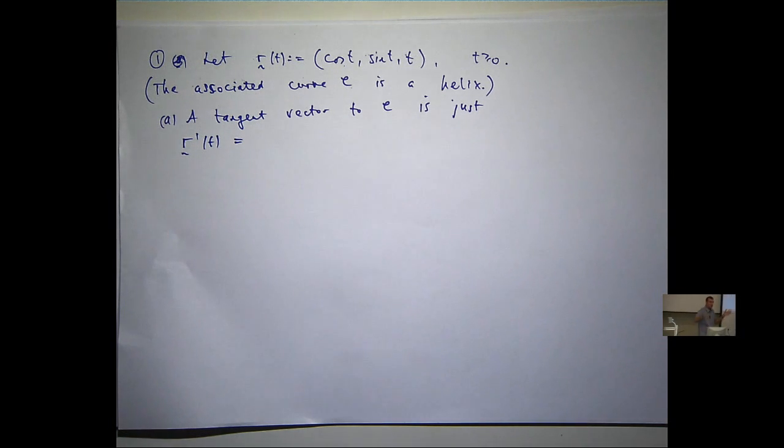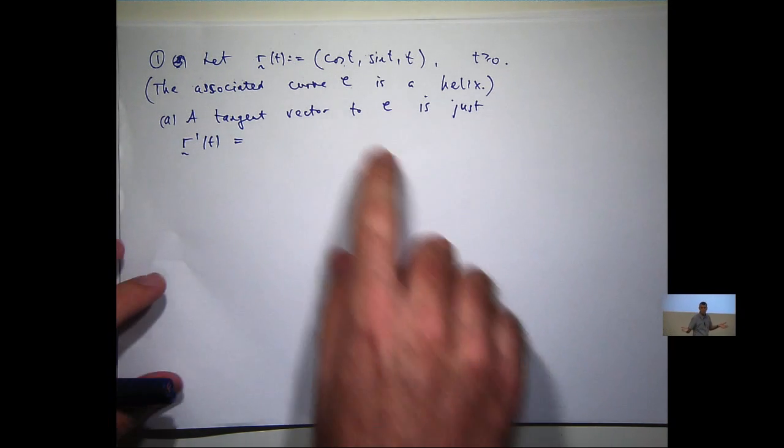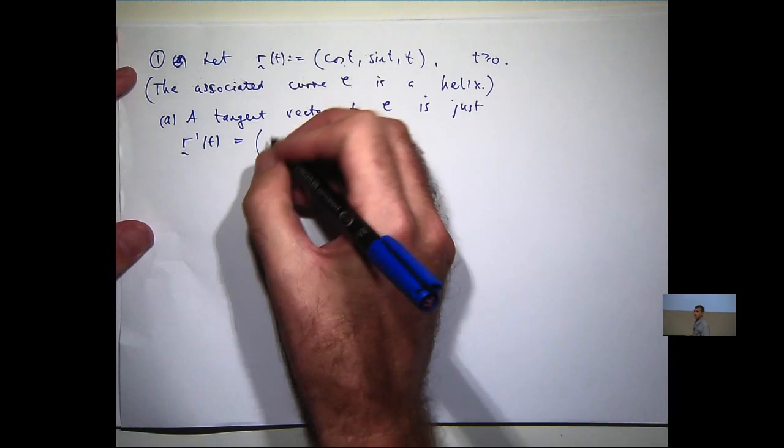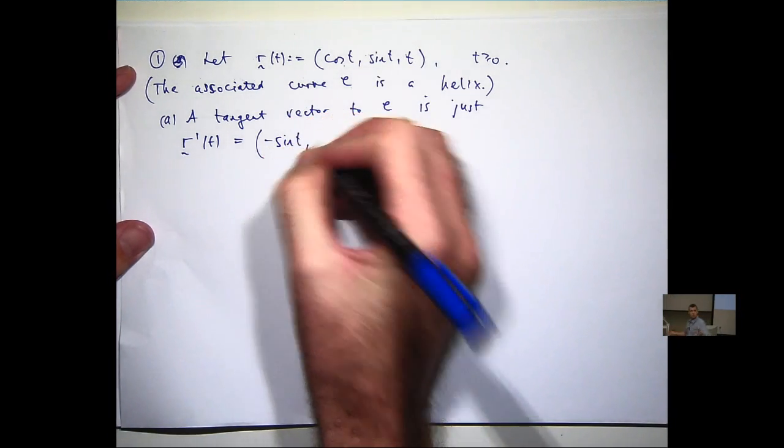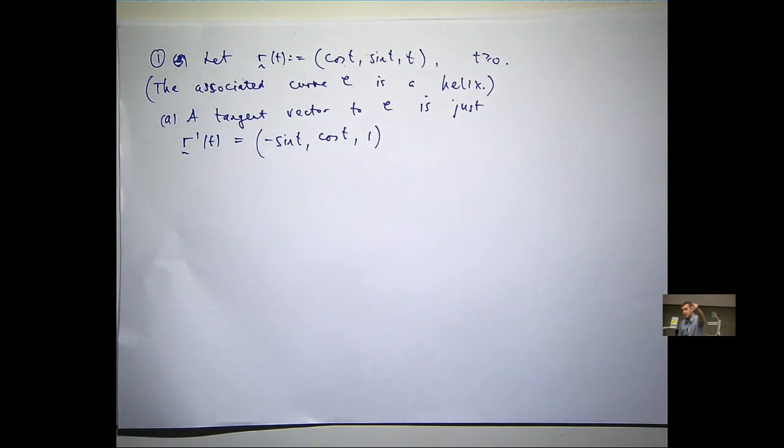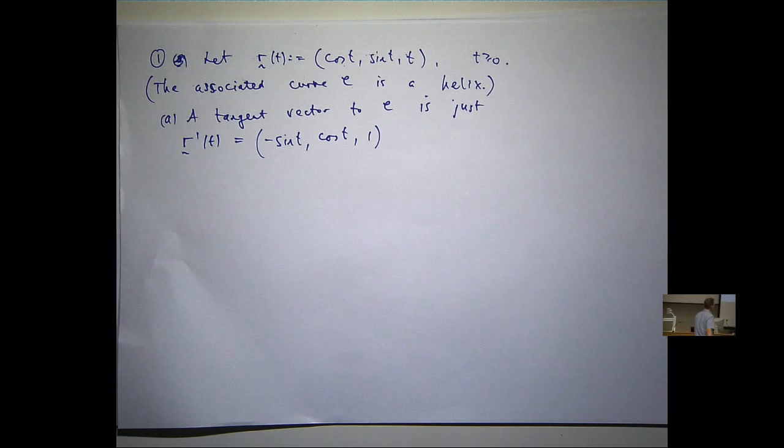So we go through and differentiate in a component-wise fashion. So cosine's going to go to minus sine, sine's going to go to cosine, and t's going to go to 1. So that's a tangent vector. Let's think about whether or not it's a unit tangent vector. Well, it's not, but we can easily make one just by looking at the magnitude and then dividing by the magnitude.